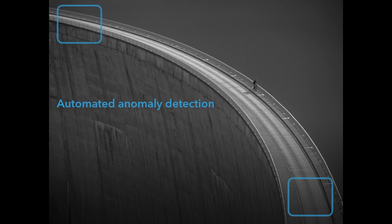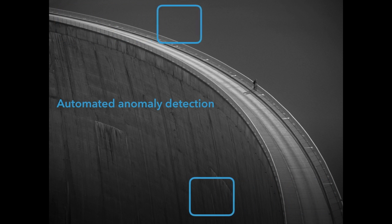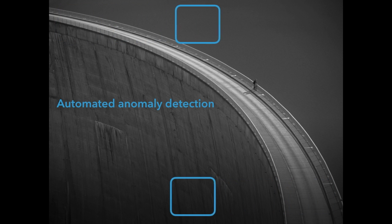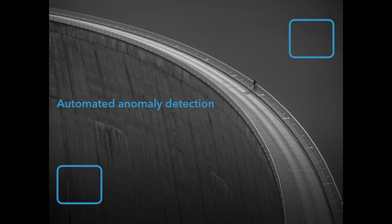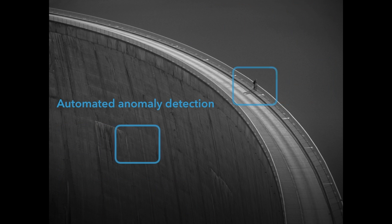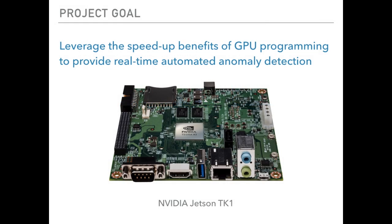The volume of data recorded by surveillance camera systems has outgrown the capacity of human operators. Thus, there exists a greater need for autonomous monitoring of data feeds. This project aims to leverage the speed-up benefits of GPU programming using an NVIDIA Jetson TK-1, with the goal of providing real-time automated anomaly detection.